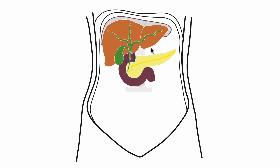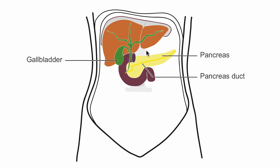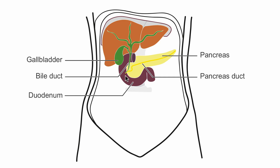The liver is bordered by the pancreas with its pancreatic duct. Since the liver excretes bile, which is stored in the gallbladder, the bile flows over the bile duct, joins the pancreatic duct, and is excreted into the duodenum.